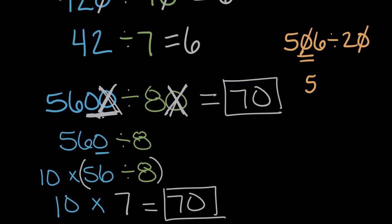We cannot cancel the zeros because this zero is not on the end. So the new problem this would give us, 56 divided by two is not equivalent, does not equal the top division problem. So we cannot cancel zeros unless they are at the end of the problem, and we cancel the same amount in both the dividend and the divisor.